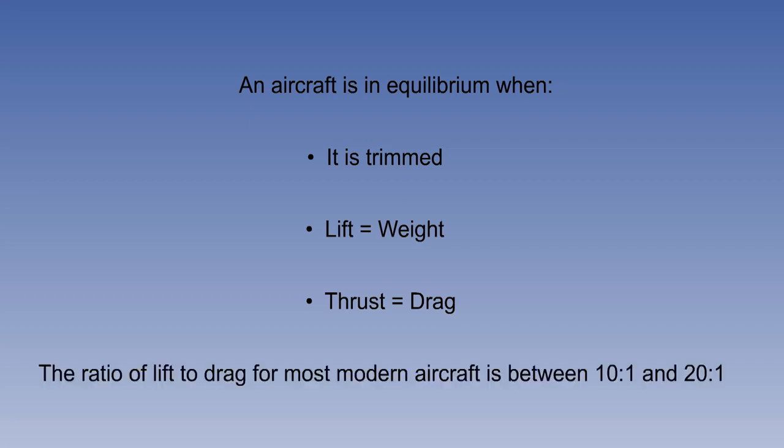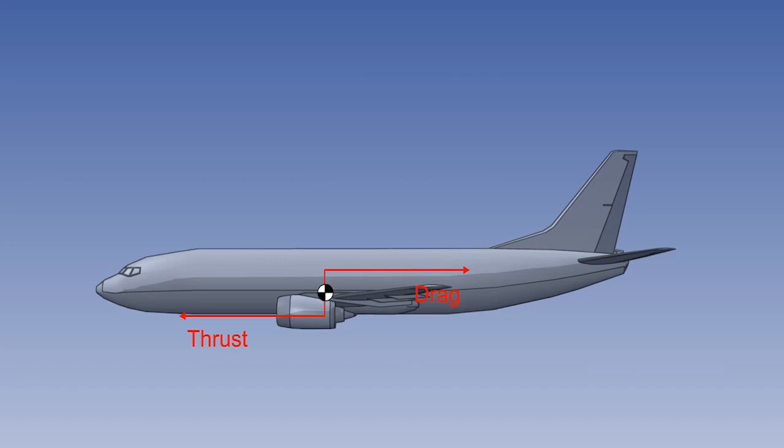The proportion of the lift force to the drag force, known as the lift-drag ratio, for most modern aircraft is between 10 and 20 to 1. In simple terms, this means that lift is 10 to 20 times greater than drag. The lines of action of thrust and drag usually lie fairly close together, so the moment of this couple is small and will be disregarded for this study.